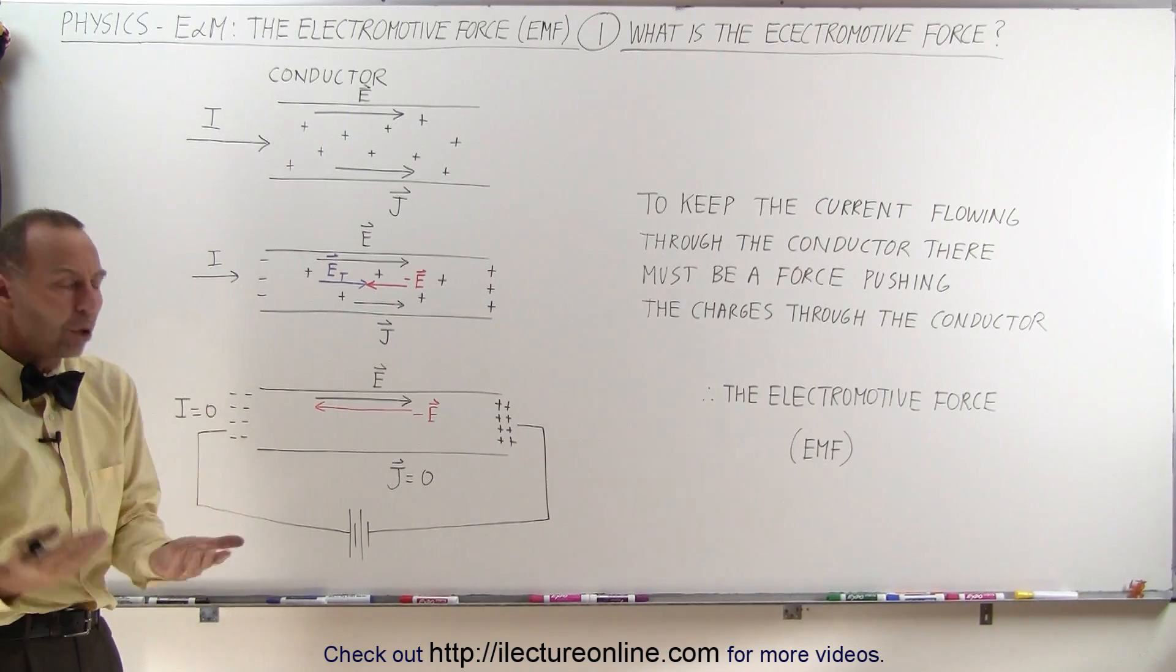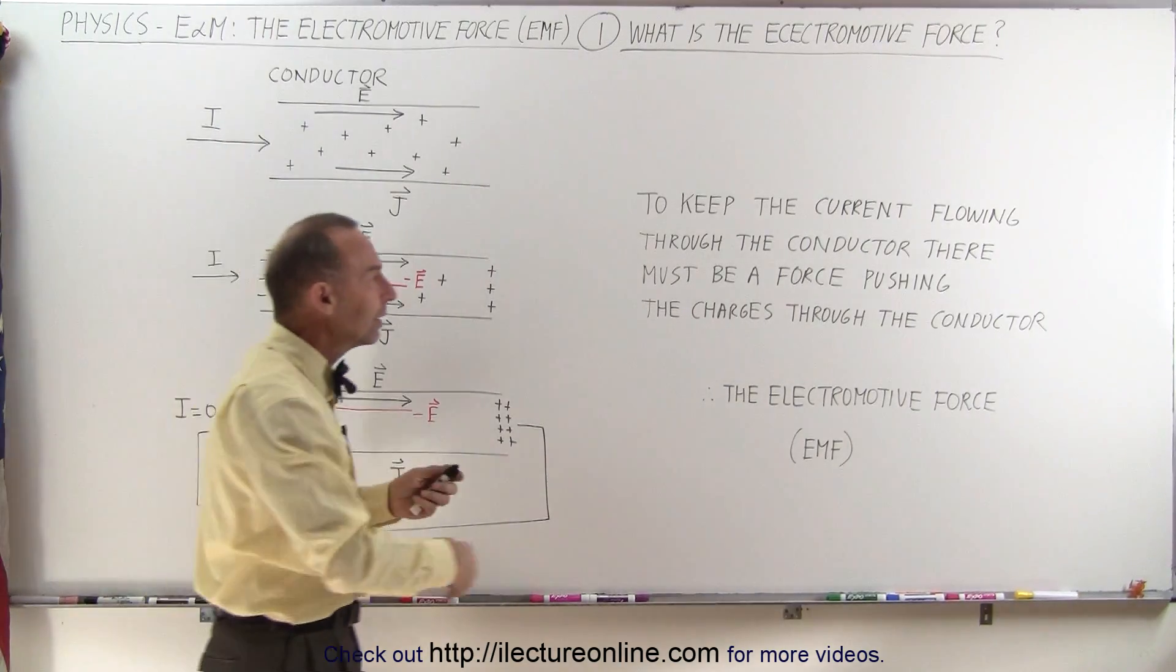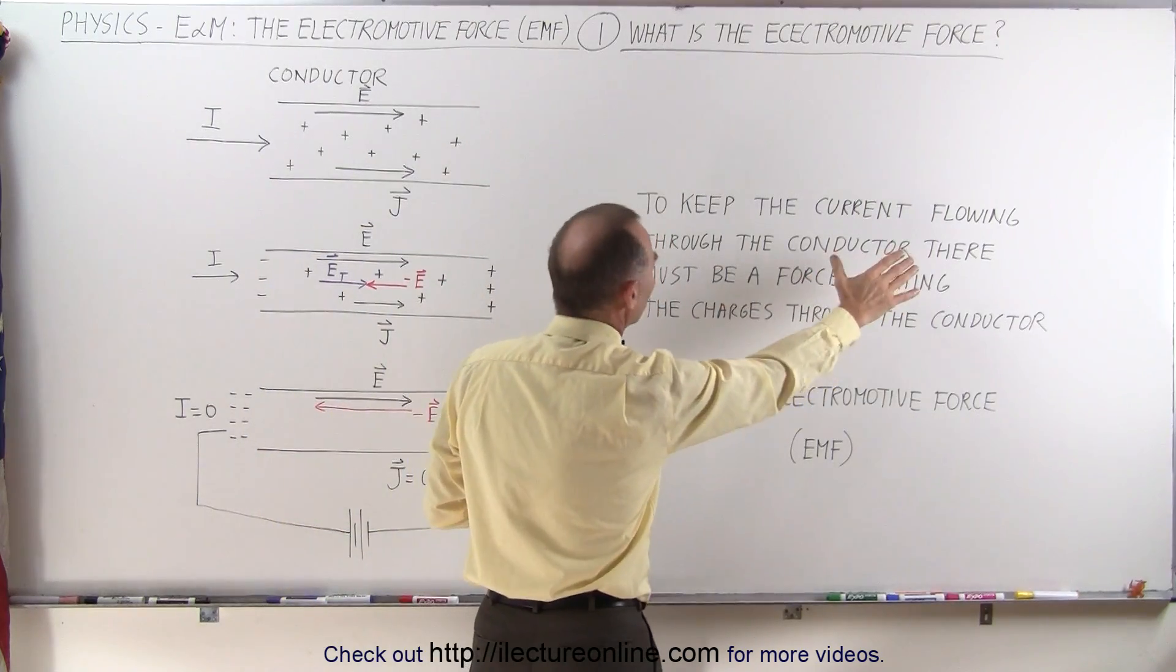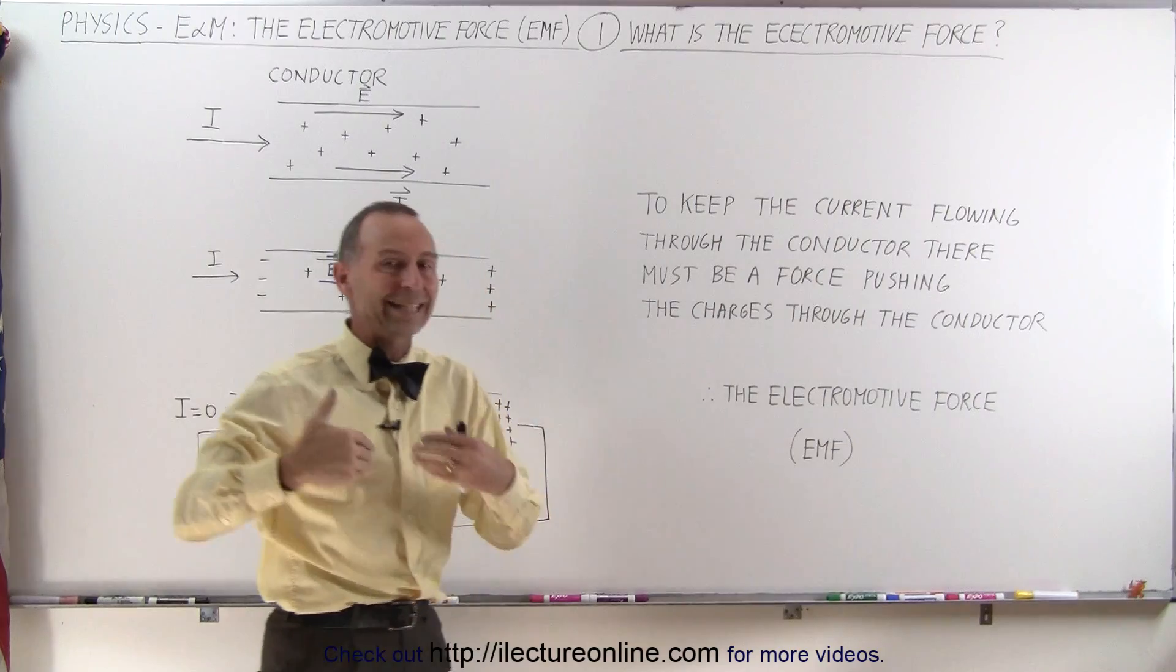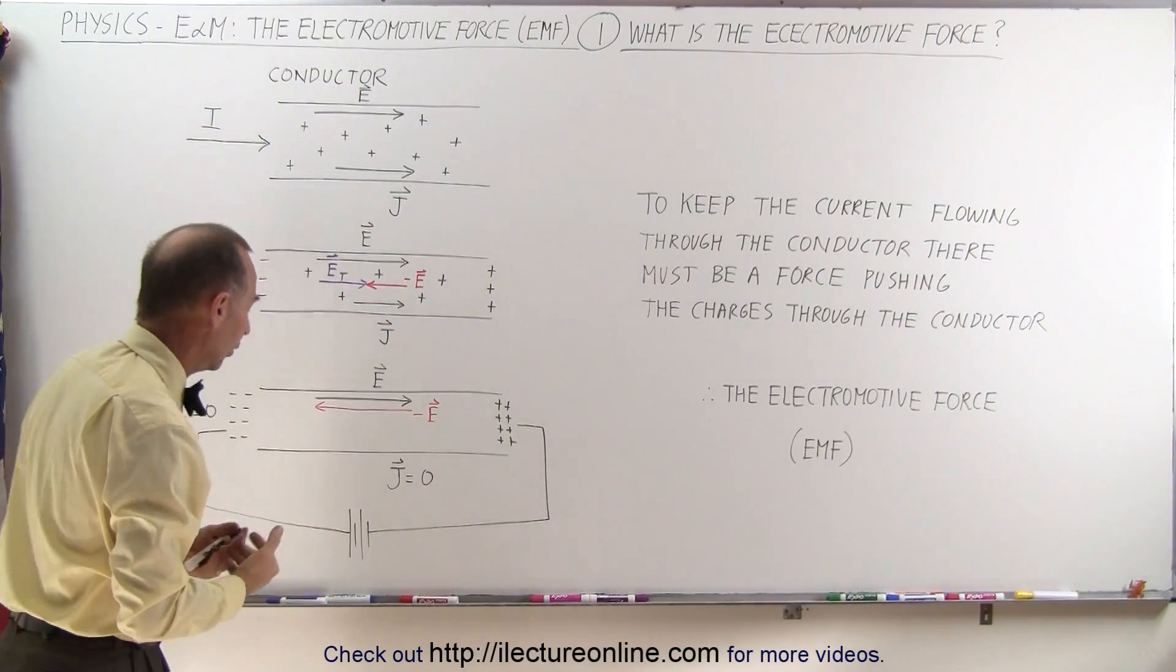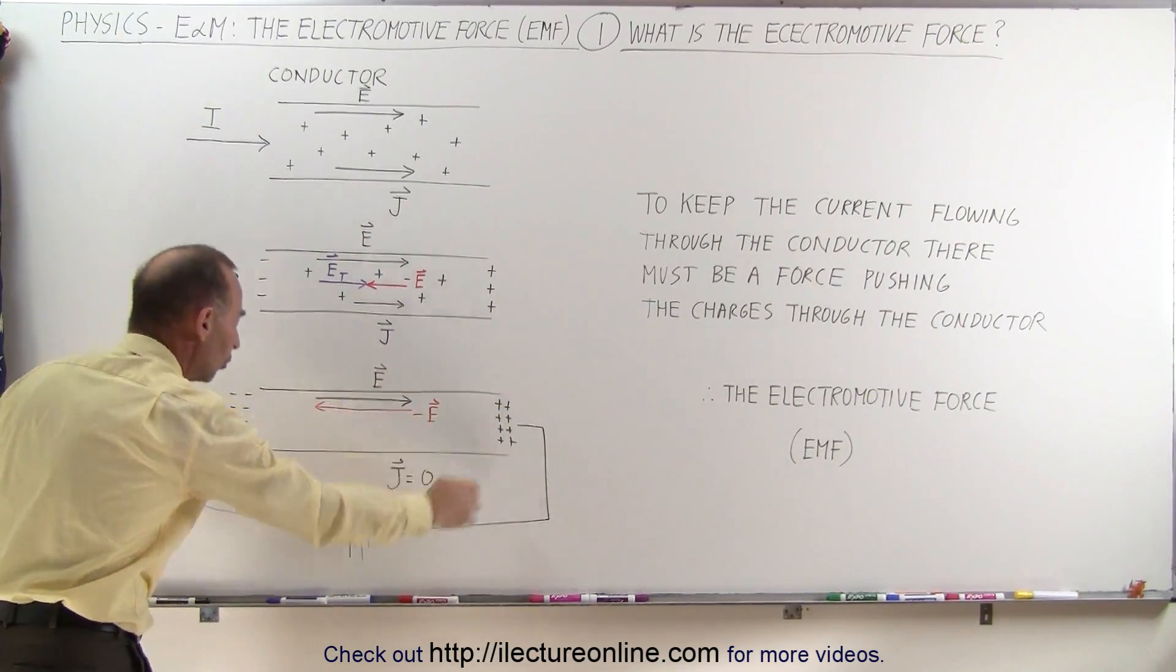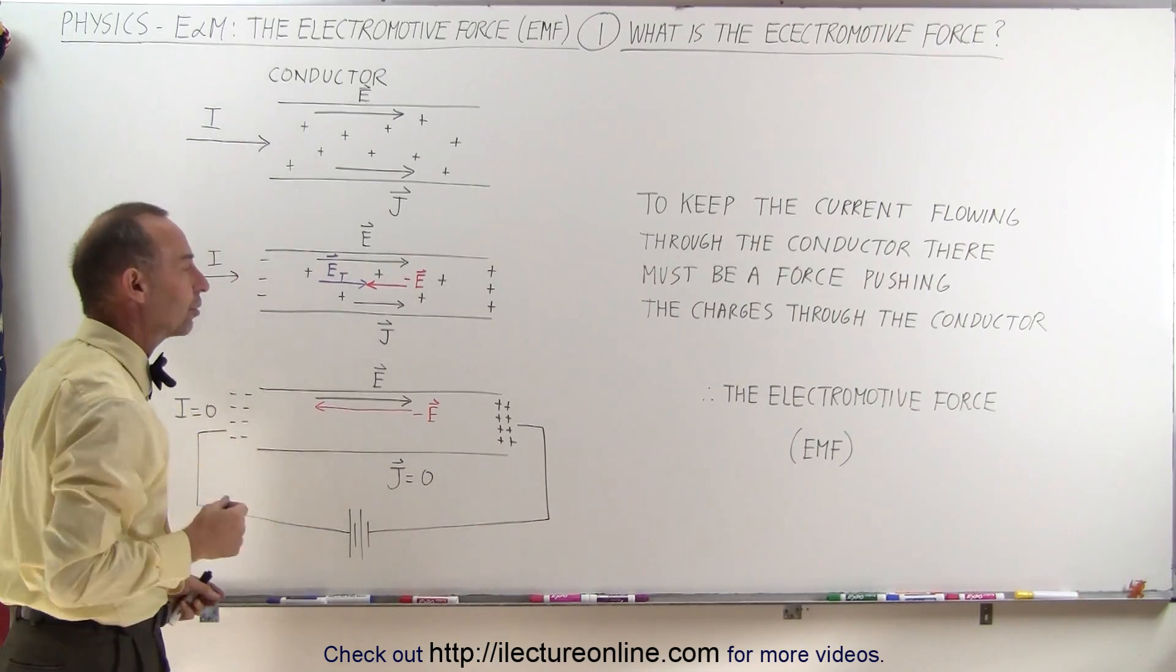So to keep the current flowing, the concept was that there must be some sort of force. There must be a force pushing the charges through the conductor, or they would not continue to flow. So there must be something causing charge to flow through the conductor.